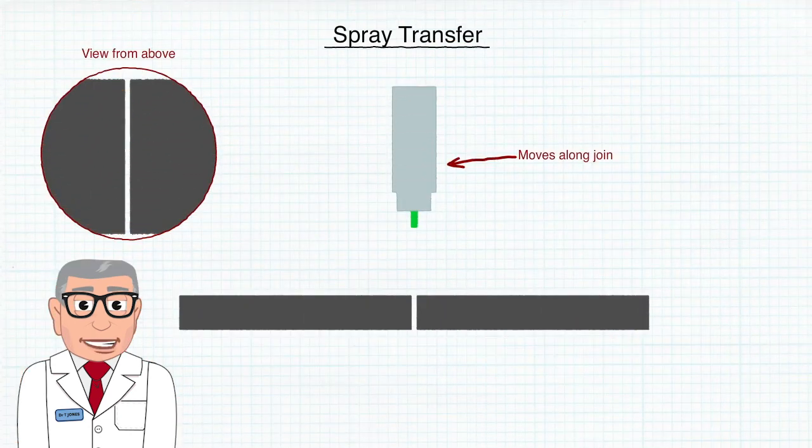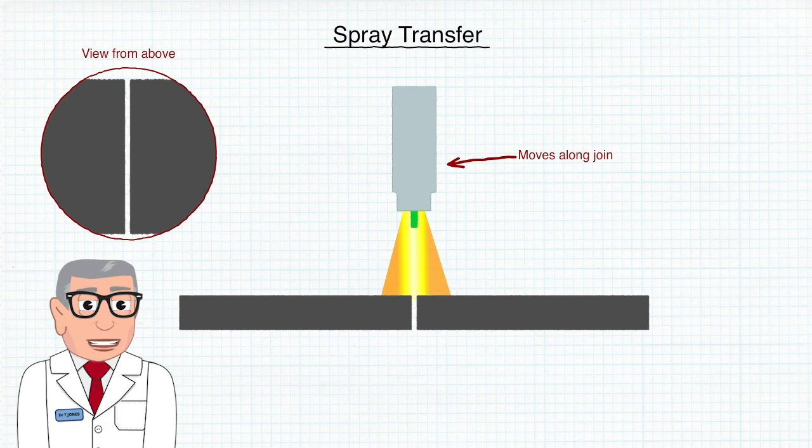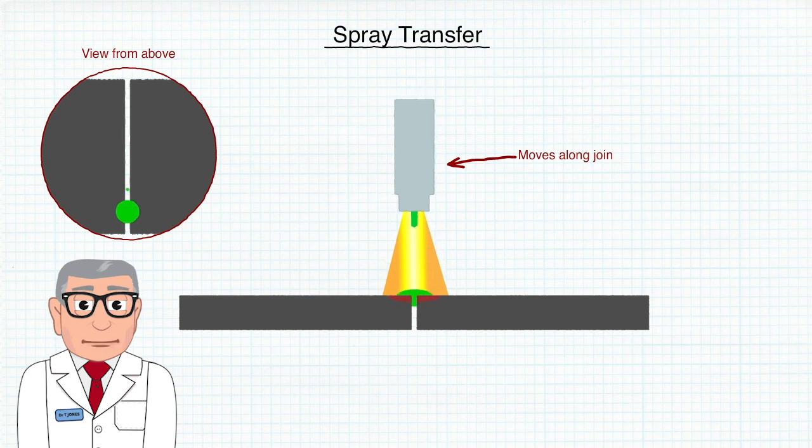Spray transfer, which occurs at a relatively high current, is a smooth transfer mode of molten metal droplets into the weld pool.